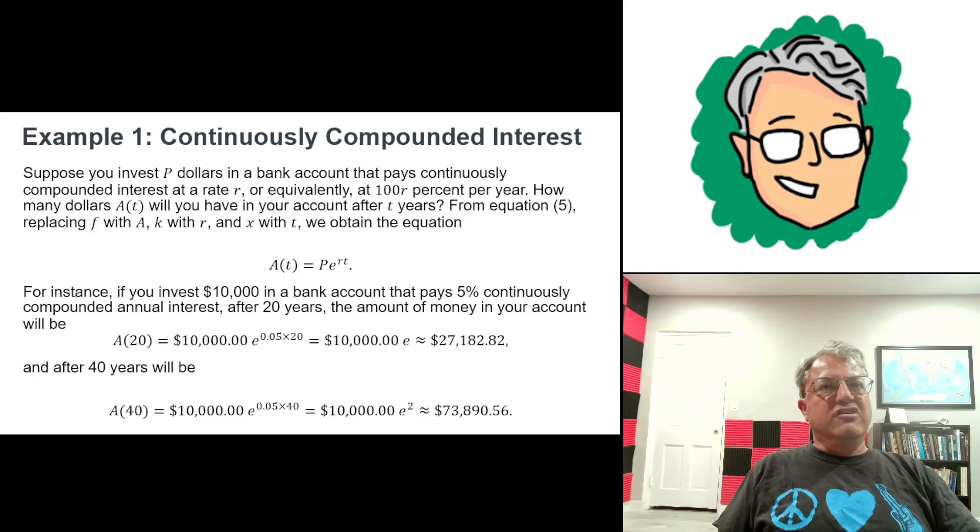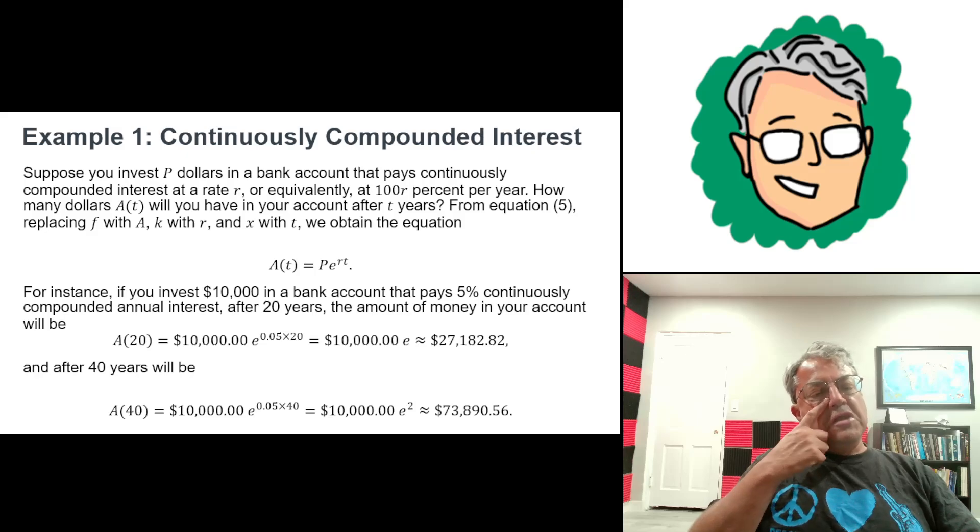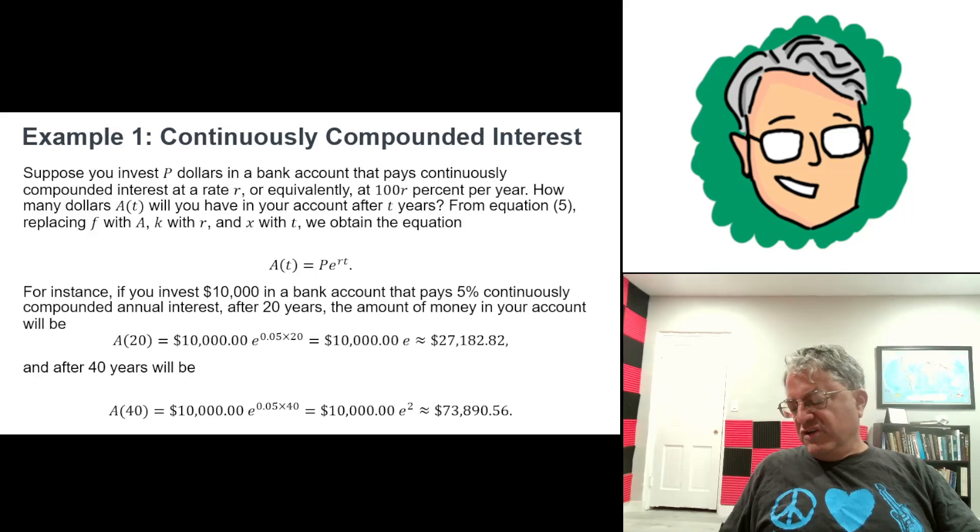where P is your principal. That's the initial amount of your investment in dollars. R is the interest rate, and usually write it as a percent per year. So you have to multiply R by a hundred if you want a percent. So for instance, if your interest rate is 5% a year, then R would be 0.05. And t is just the number of years of your investment. And then A(t) is the amount of money in your account after t years.